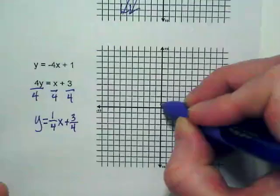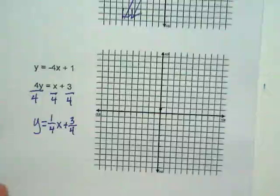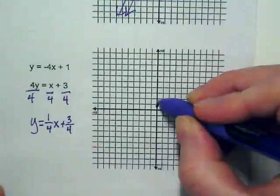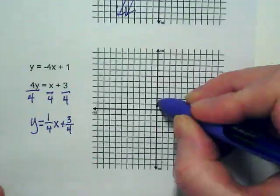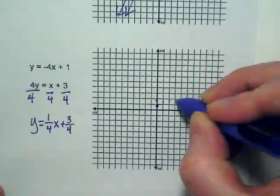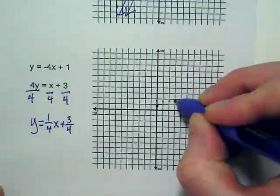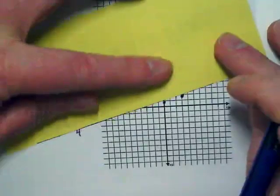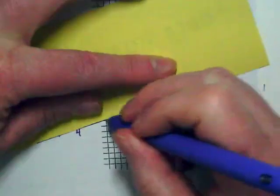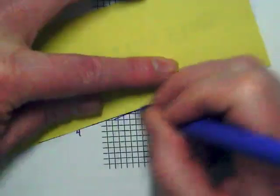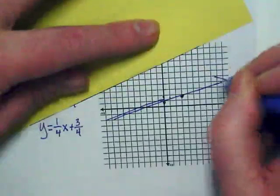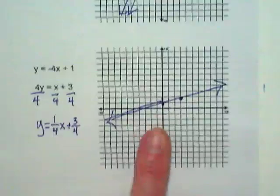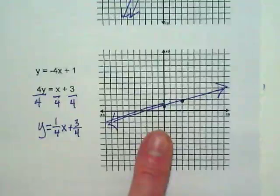That means when you do your slope and you rise up one, you're not rising all the way to two. You're gonna go to about here and then you can run across four. So this is the graph for the second equation. This is not a great straight edge soft paper. So this is a graph for y equals one-fourth x plus three-fourths.